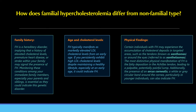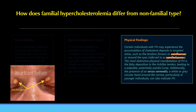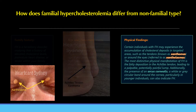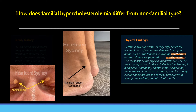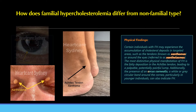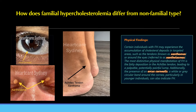Physical findings: Certain individuals with FH may experience the accumulation of cholesterol deposits in targeted areas, such as the tendons, known as xanthomas, or around the eyes, referred to as xanthelasmas. The most distinctive physical manifestation of FH is fatty deposition in the Achilles tendon, leading to a palpable, potentially painful lump. Additionally, the presence of an arcus cornealis — a white or gray circular band around the cornea — particularly in younger individuals, can also indicate FH.